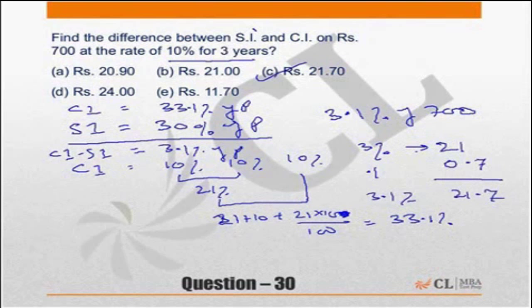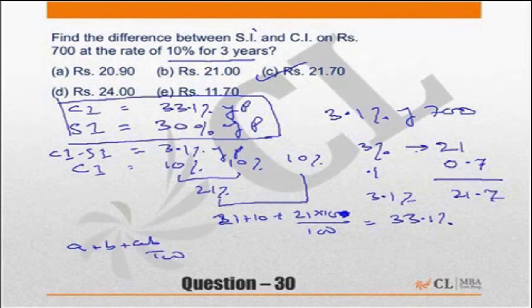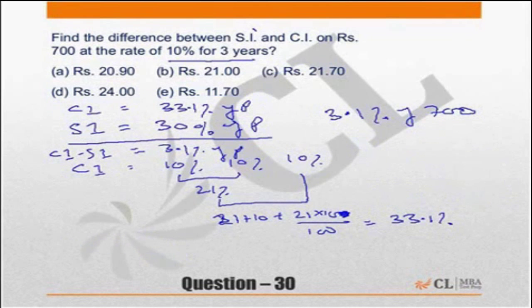So, again going back to this thing, compounding is nothing but successive increment. Wherever you have a compounding you should be able to replace it with successive increment. Then this is the successive increment formula A plus B plus AB by 100. This is all I am using out here in case of compounding.